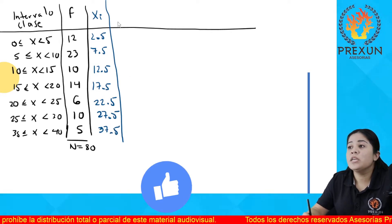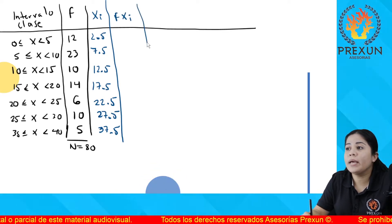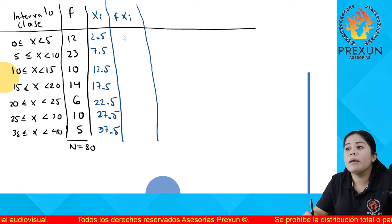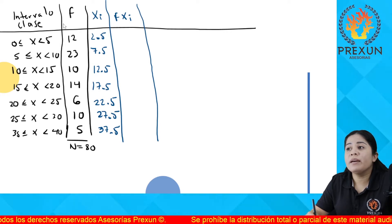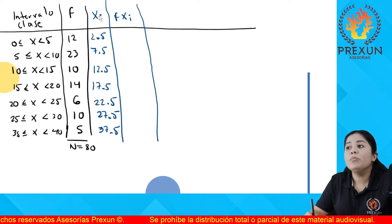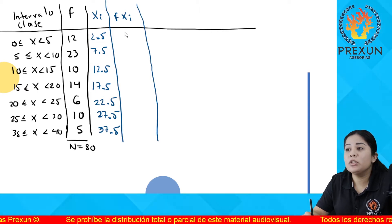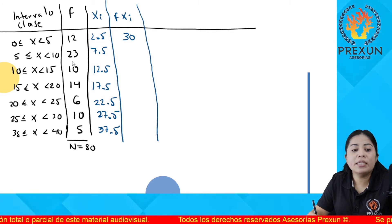¿Qué sigue después? Voy a agregar la siguiente columna, F por x sub i. ¿Para qué? Para este procedimiento me va a ayudar a poder determinar la media para estos datos agrupados. Aquí voy a multiplicar la frecuencia de la segunda columna por la marca de clase de la tercera columna. Y al multiplicar 12 por 2.5 es de un valor de 30.